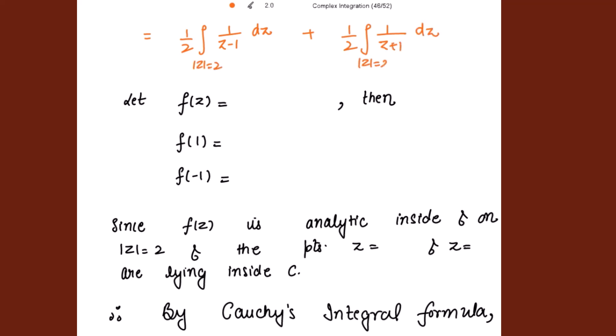For the first integral, the integrand is not defined at the point z equal to 1. And z equal to 1 is lying inside the circle |z| = 2. So for the first integral, we are going to use Cauchy's integral formula. For the second integral, putting the denominator equal to 0, we get z equal to negative 1, which means the integrand is not defined at z equal to negative 1. This point is also lying inside |z| = 2, since the circle has radius 2. So both these points are lying inside the circle.